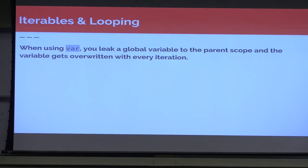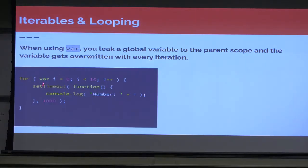So we're going to talk about iterables and looping. When you use var, you actually leak a global variable to the parent scope, because var is function scoped — it's not going to be block scoped. So as we're looping through, we have var i equals zero, as long as i is less than 10, increase i, and we're doing a setTimeout here. We're console logging i within our setTimeout. What do you think is actually going to happen?